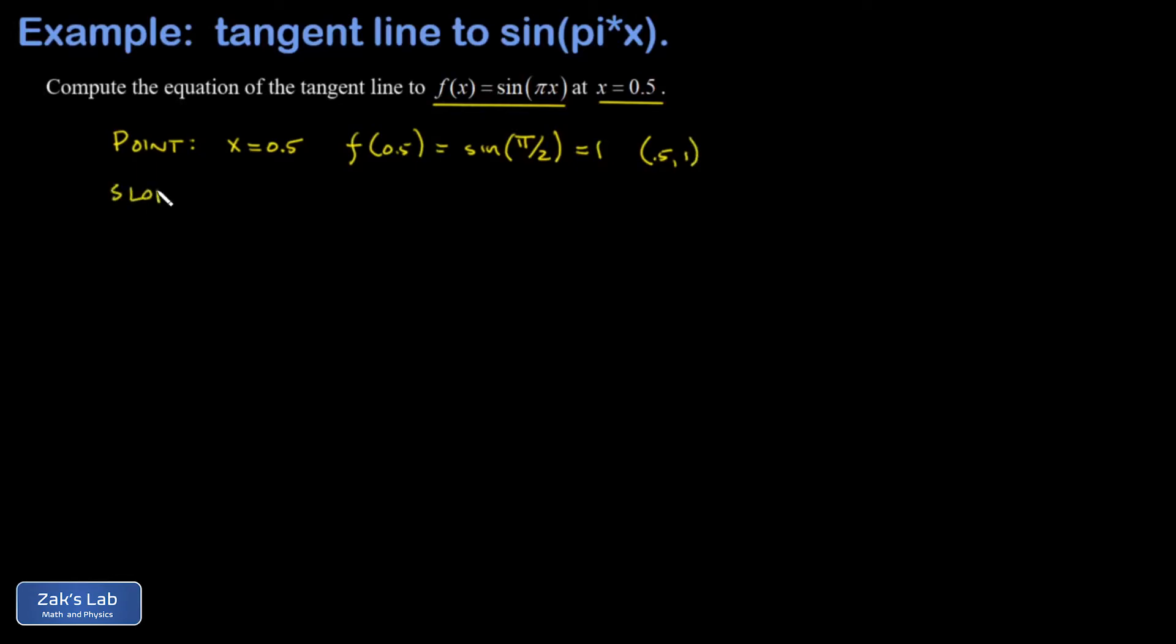And then we look for the slope at this point, and that's going to be the first derivative evaluated at x equals 0.5. And we have to start by finding the derivative in general, f prime of x.